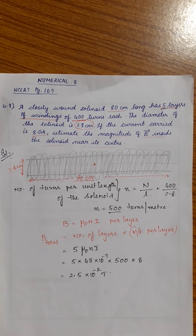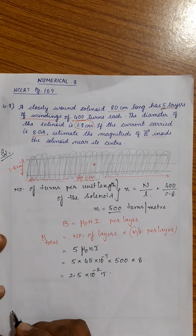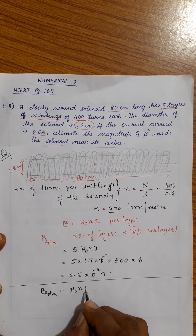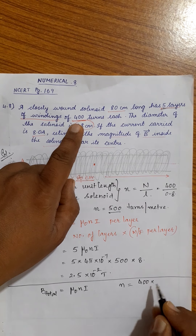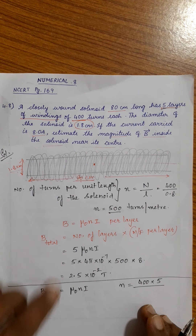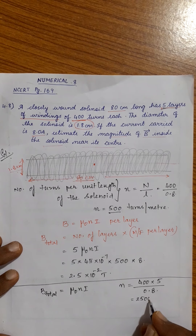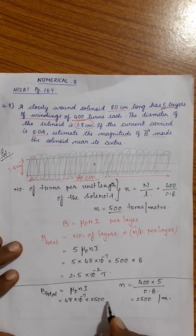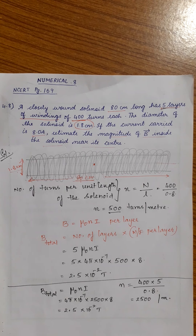This can also be done a different way. With 500 turns per layer and five layers, the total turns per unit length is 2500 per meter. Then the total magnetic field is B = μ₀nI = (4π × 10⁻⁷) × 2500 × 8, which also gives 2.5 × 10⁻² tesla. Both methods give the same answer — you can use either approach.